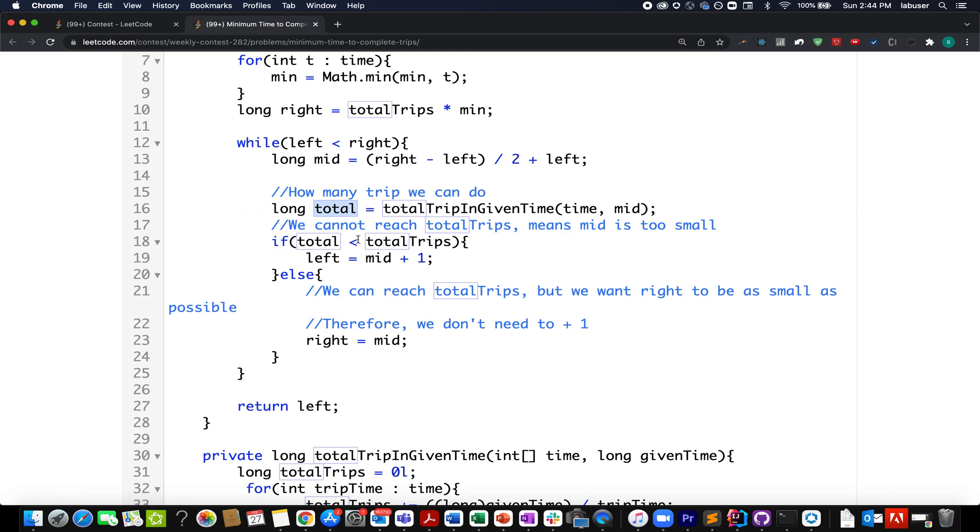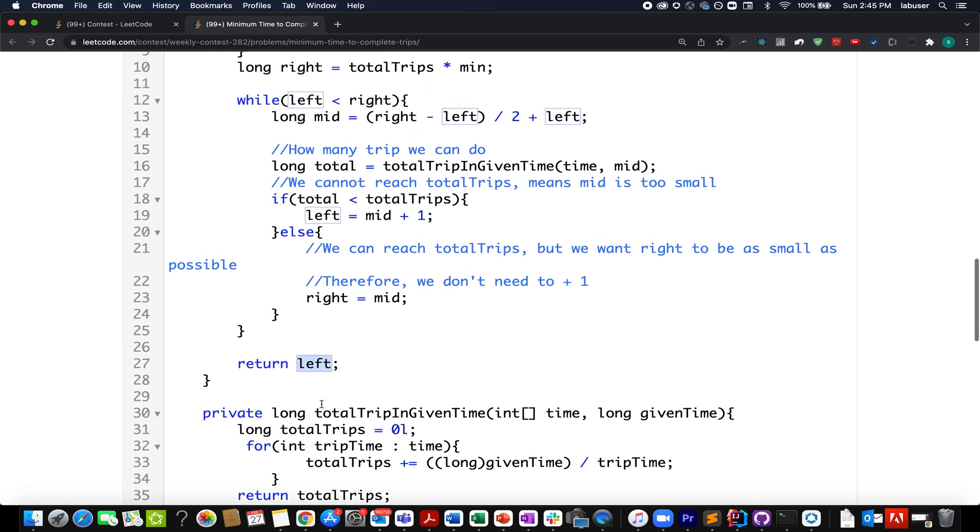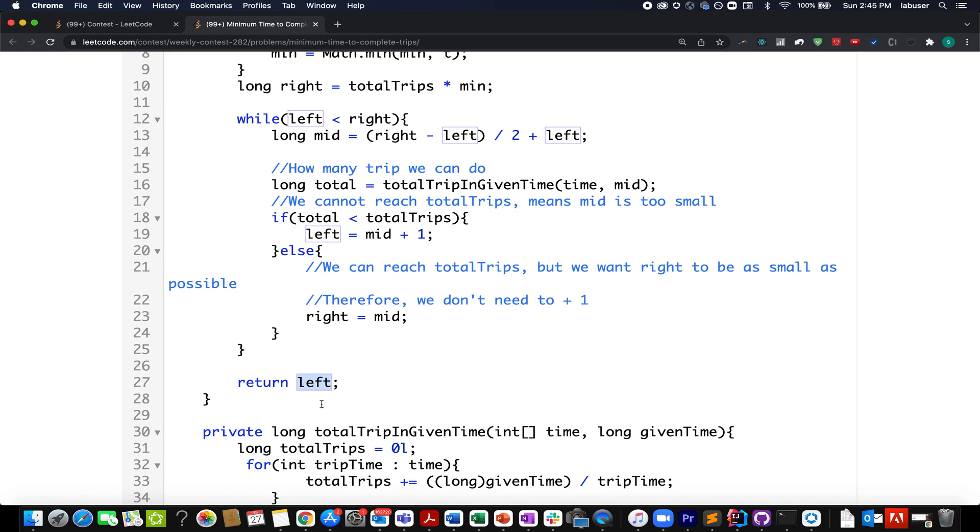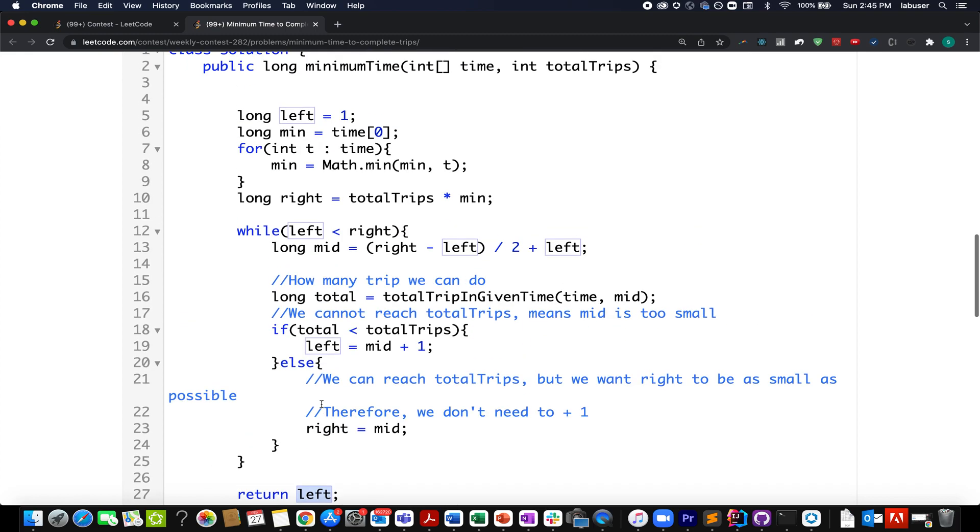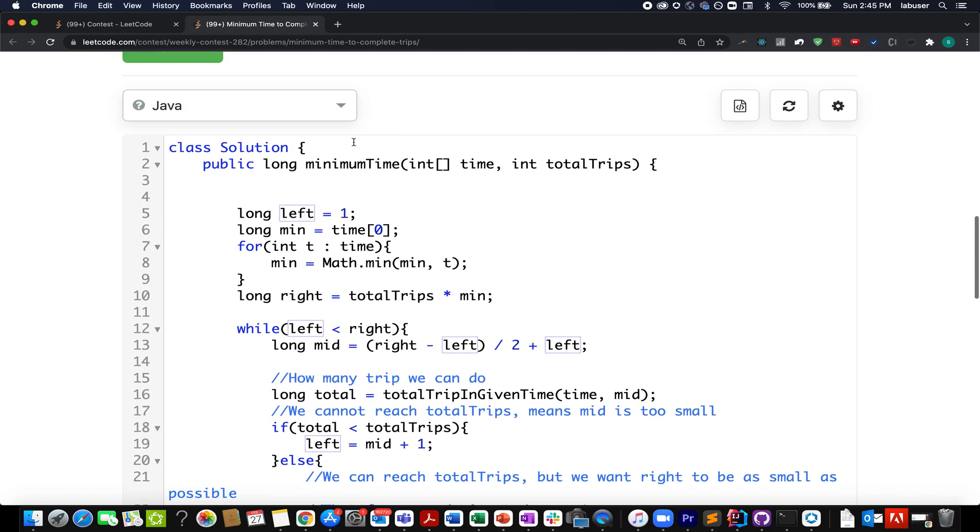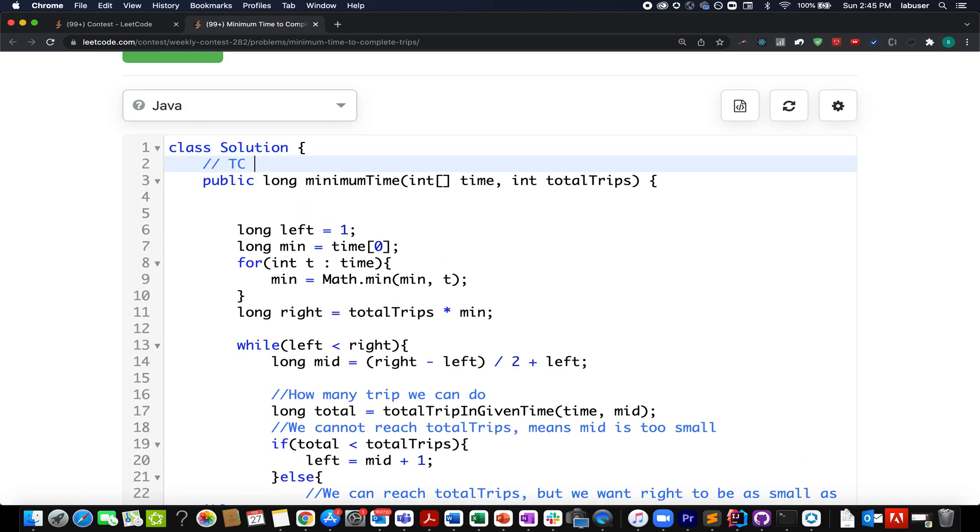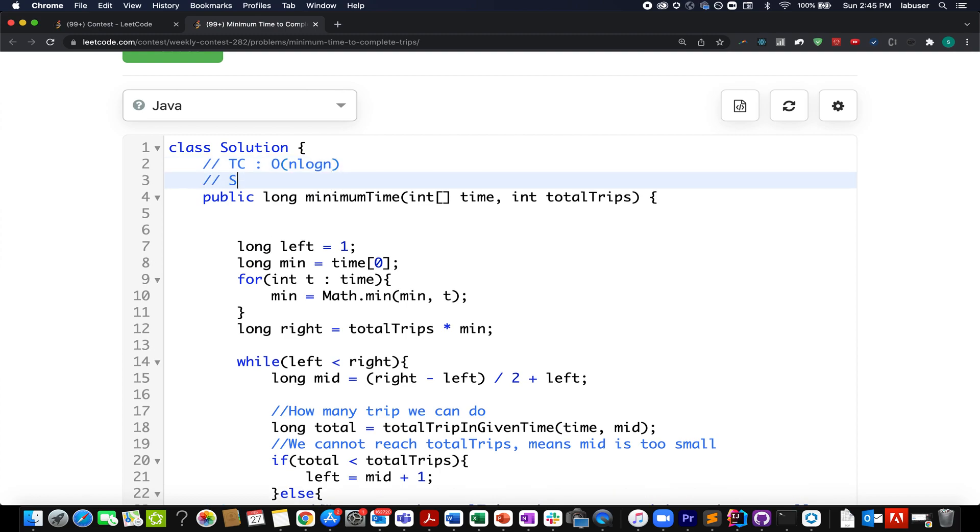If this total value turns out to be less than the total trips, what do I do? I update my left to mid plus 1. Otherwise, I update my right to mid. In the end, as soon as this loop breaks, I simply return the left value that will give me the answer. So left and low can be interchanged here in the terminology. I have used left, however in the presentation I used low. The time complexity for this approach would be order of n log n, and the space complexity would be constant space. We are not using anything extra for this.